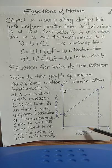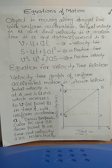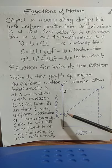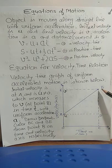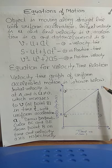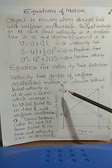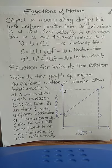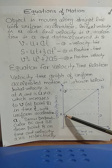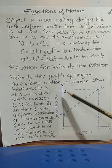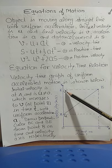Starting from O to point C, the time taken is small t. From O to C, the time is t, and in this time the object goes from A to B. So, the initial velocity is U, and at point B we have the final velocity V. Point A denotes the initial velocity which is non-zero, and point B denotes the final velocity which is V.